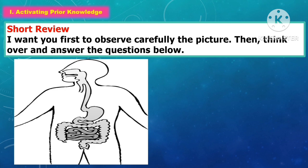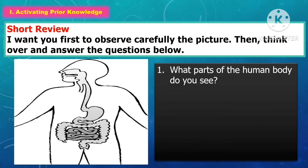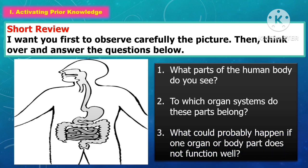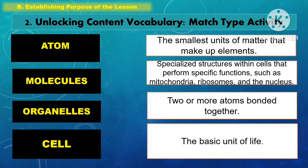For activating prior knowledge, in a short review the students will first observe carefully the picture, then think over and answer the question. In establishing the purpose of the lesson, the students will unlock the content vocabulary using a match type activity.